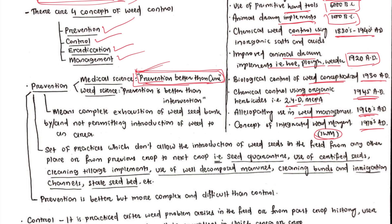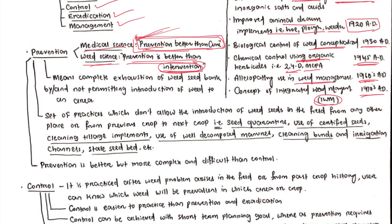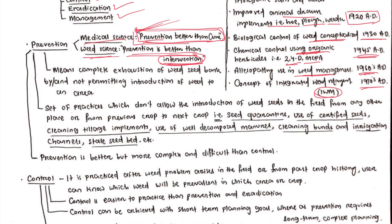In weed science, we say prevention is better than intervention, because weeds intervene with the crop plant through competition or allelopathy. So prevention is better than intervention — meaning how we can prevent weed seeds from entering our crop field. We should exhaust the weed seed bank.